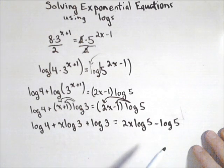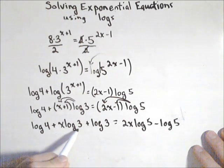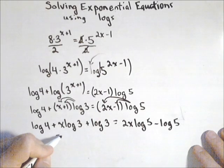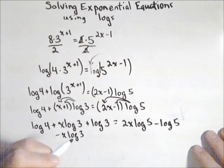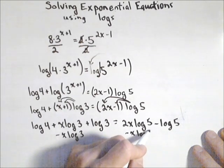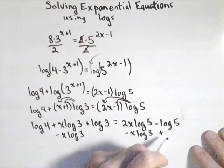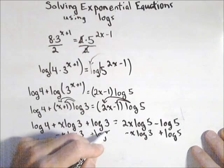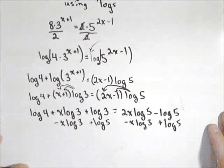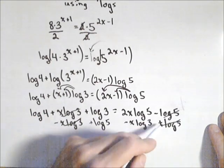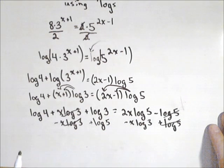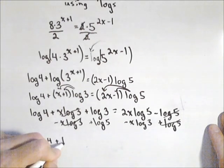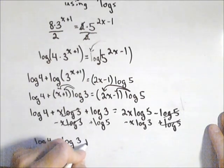So what I'm going to do next. Notice I have two x's in here. I want to get all the terms with x in it on the same side, all the terms without x on the other side. So I'm going to take this term and move it over to that side by subtraction. So I'm going to subtract x log three off of both sides. So minus x log three. And I'm going to move this to this side by adding log five to both sides. We are getting really close to being done here.